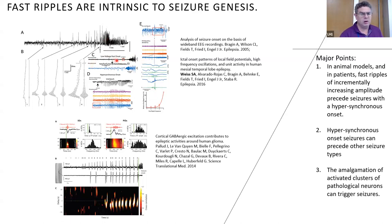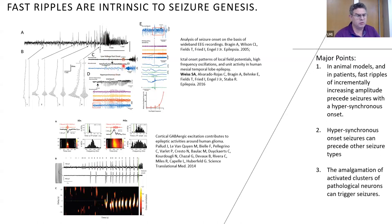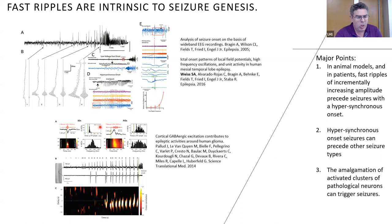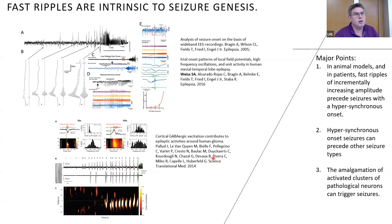Panel C shows a seizure with a different onset morphology called low-voltage fast onset, preceded by a hypersynchronous seizure with fast ripples — in this case a micro-seizure observed only on microelectrodes. Recently, surgical tissue from patients with gliomas and epilepsy also showed seizures preceded by hypersynchronous discharges with superimposed fast ripples. Together, these results suggest that pathological neurons generating fast ripples may synchronize and coalesce to trigger seizure onset.